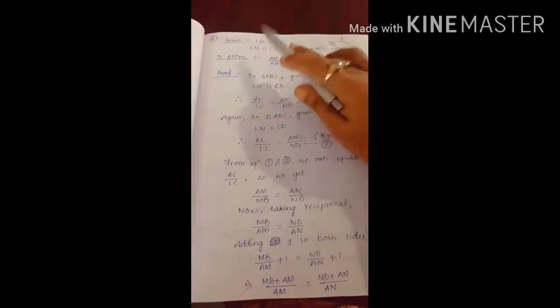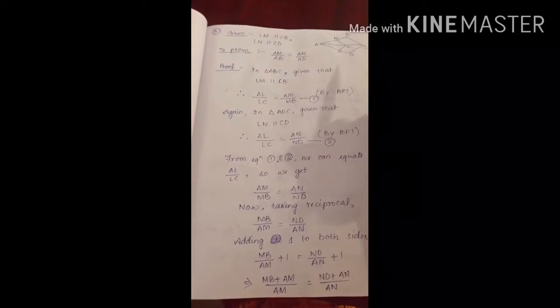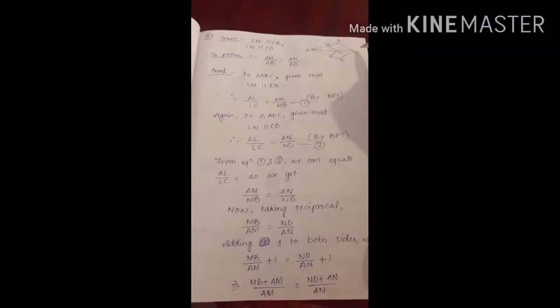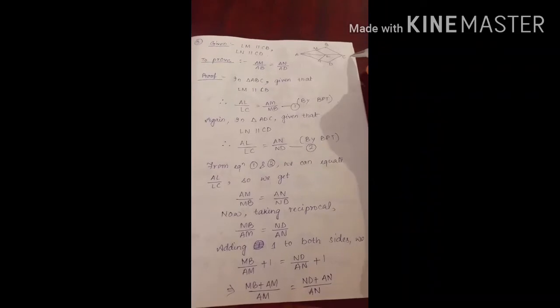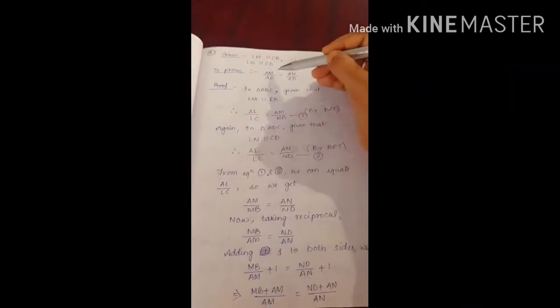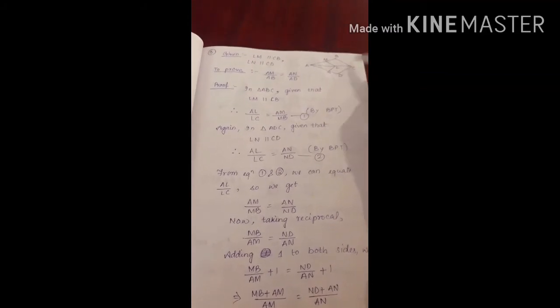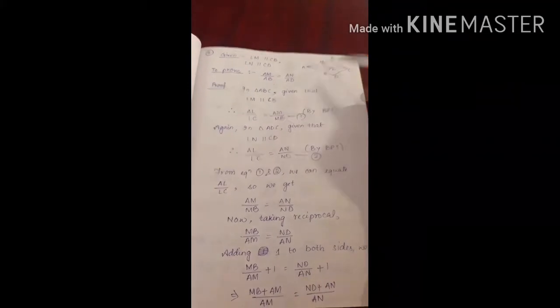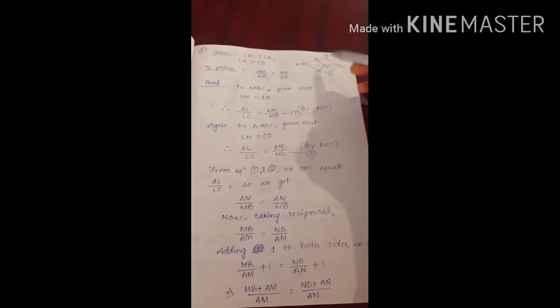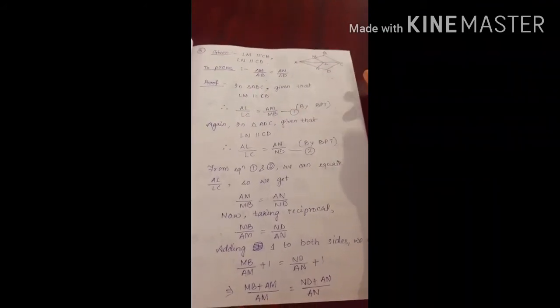Next is question number 3. The diagram is given and we are given LM is parallel to CB and LN is parallel to CD. We have to prove AM/AB = AN/AD. Here we have two triangles: triangle ABC and triangle ADC. Using the parallel lines in each triangle, we will equate the ratios.